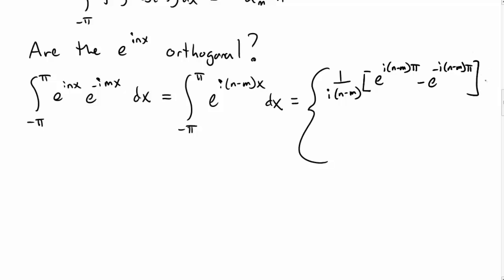And so I get a 1/(i(n-m)). And these exponential factors. Again, that's for n not equal to m. And I get 2π if n happens to be equal to m. Let's look at the n not equal to m case. So let's call n-m some other integer k. It's just some integer.